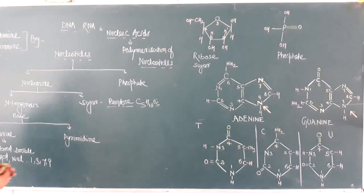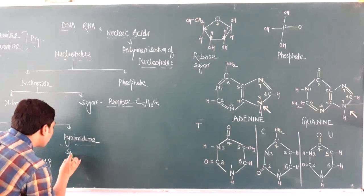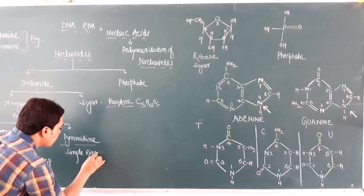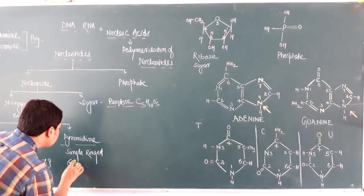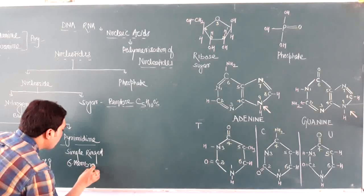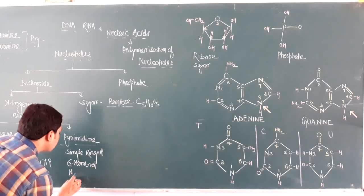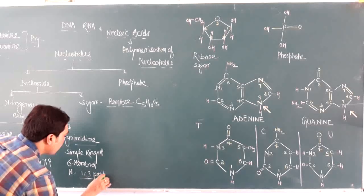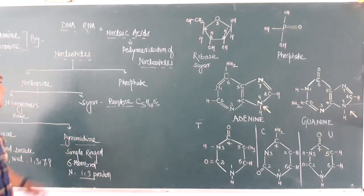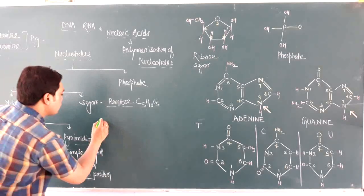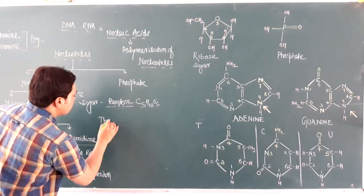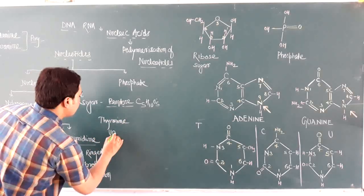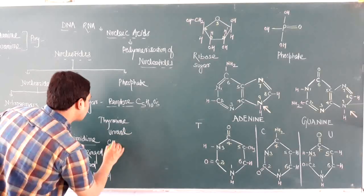Pyrimidines are single-ringed, six-membered structures having nitrogen at the first and third positions. In pyrimidines we include thymine, uracil, and cytosine.